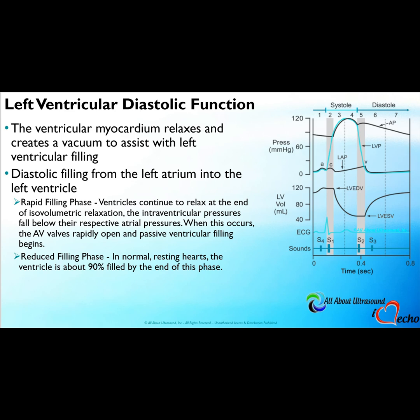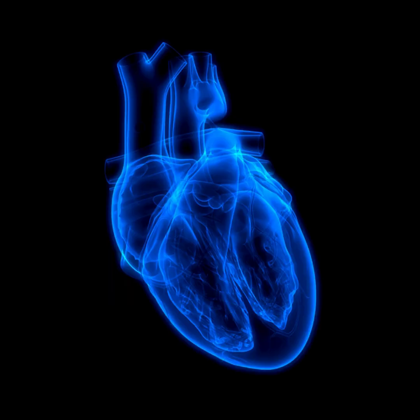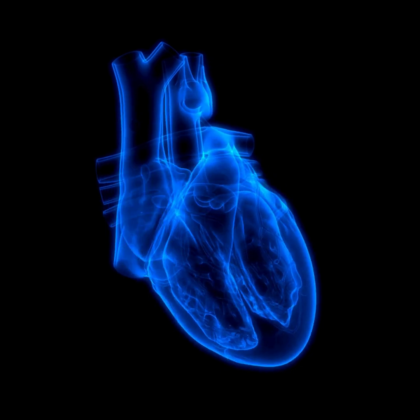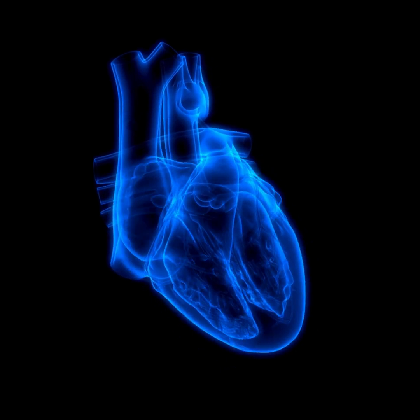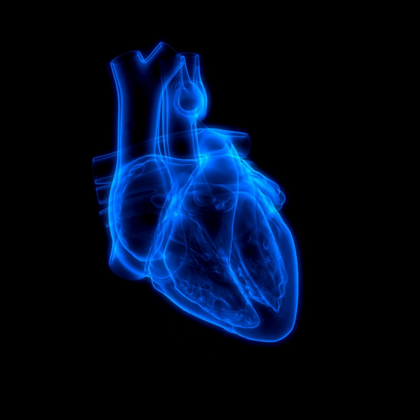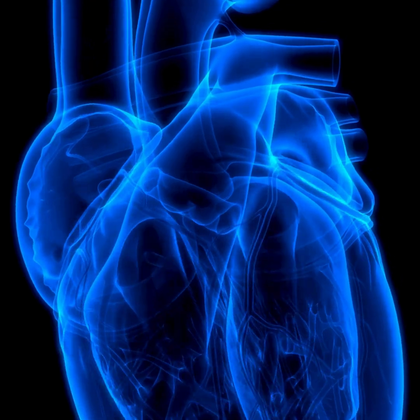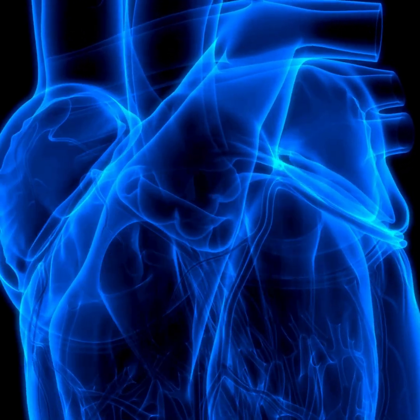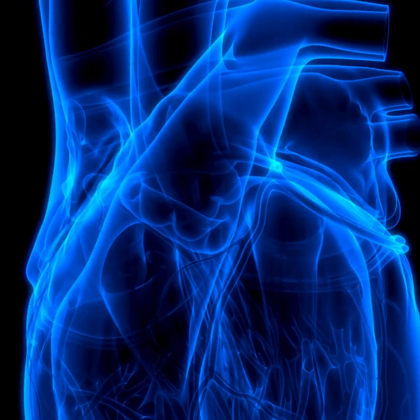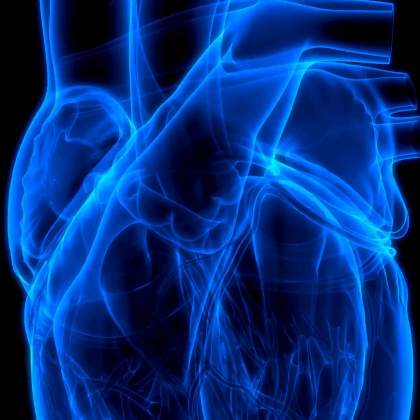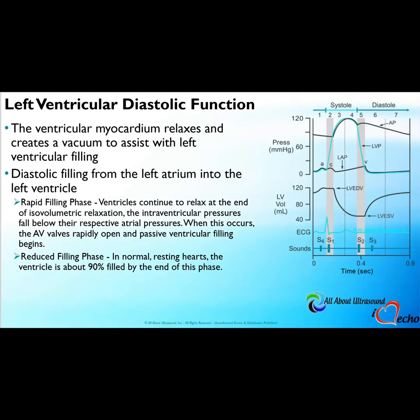The ventricles continue to relax at the end of isovolumetric relaxation, which is phase five, and the pressures fall below the atrial pressure. When that occurs, those atrioventricular valves open rapidly and passive ventricular filling begins. Then reduced filling, phase seven, takes place where the ventricle is about 90% filled by the end of that phase.